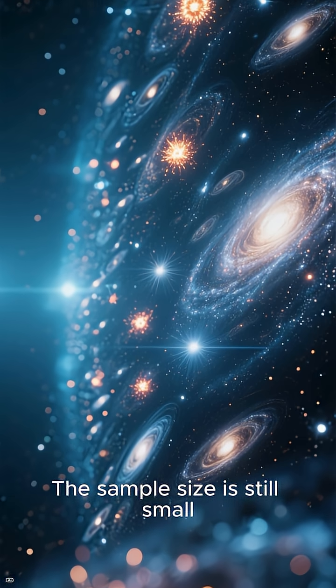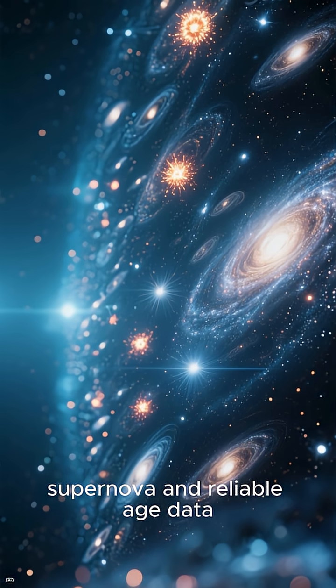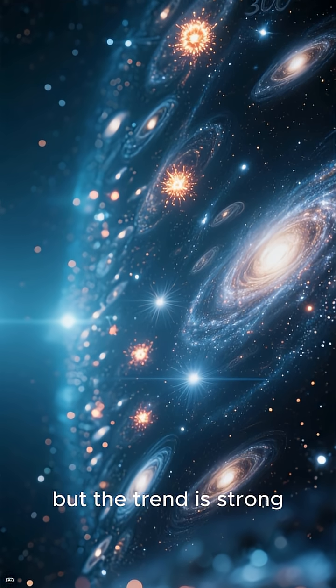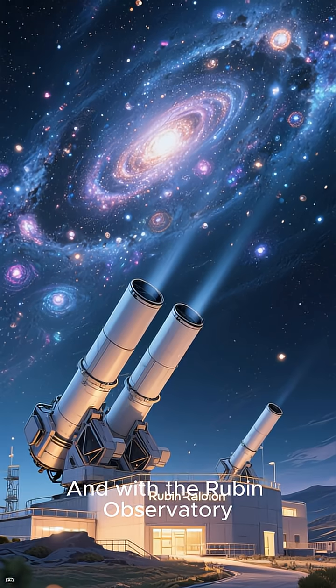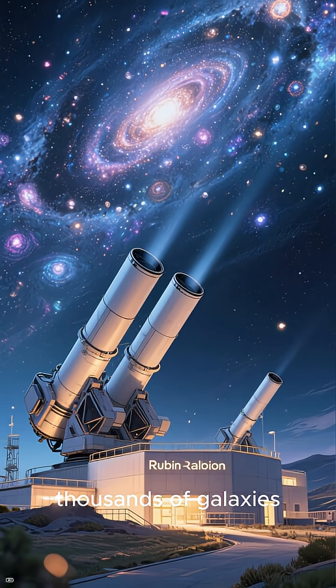The sample size is still small—only about 300 galaxies have both a supernova and reliable age data. But the trend is strong, and with the Rubin Observatory coming online soon, we'll get ages for thousands of galaxies.